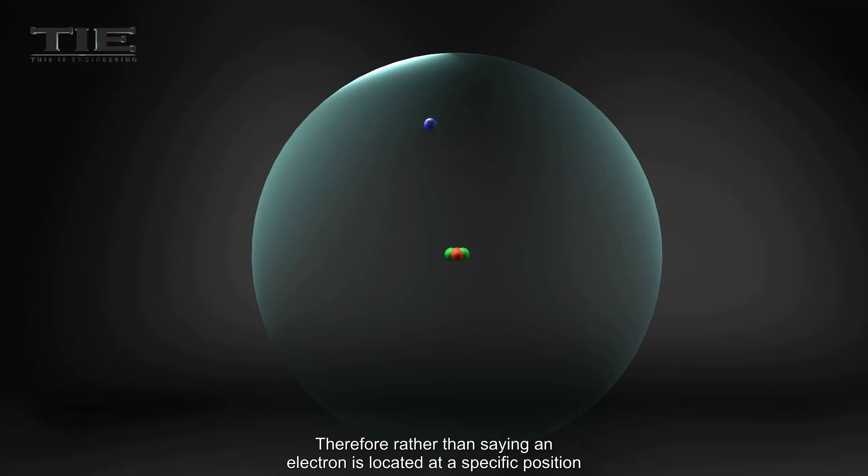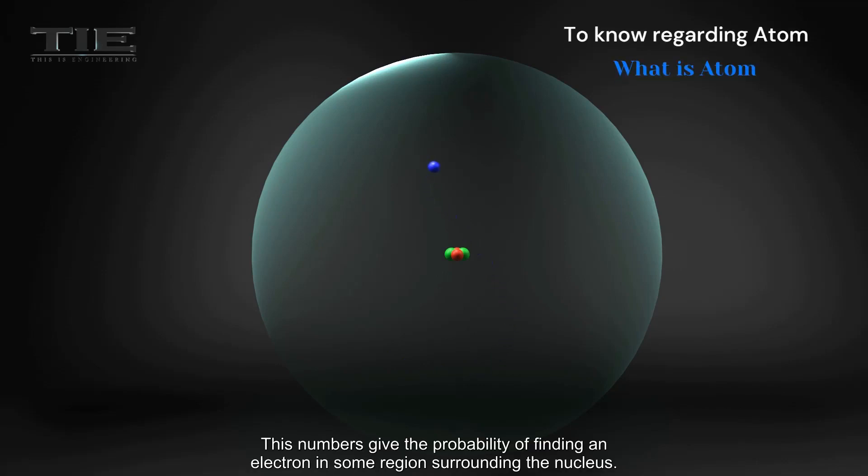Therefore, rather than saying an electron is located at a specific position, quantum numbers are used to describe each electron in an atom. This numbers give the probability of finding an electron in some region surrounding the nucleus.